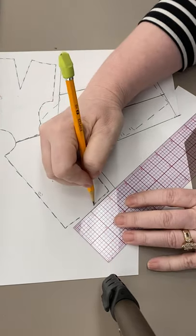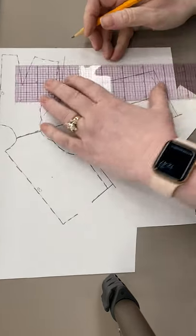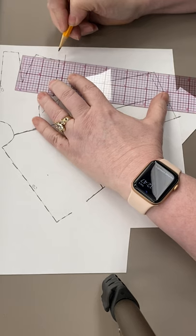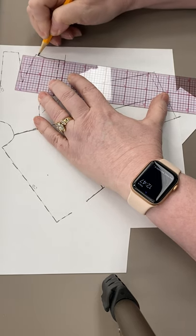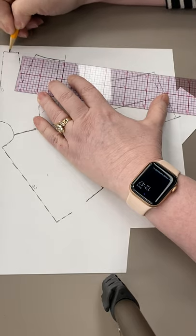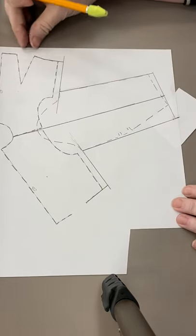You would extend these lines over all the way to that extension, all the way to that extension. If you're going to keep the darts, then you'd fold your darts in.